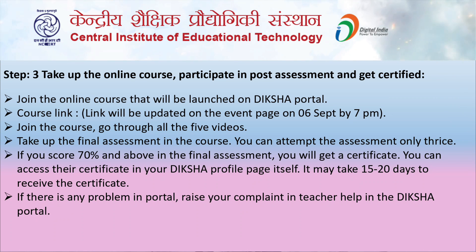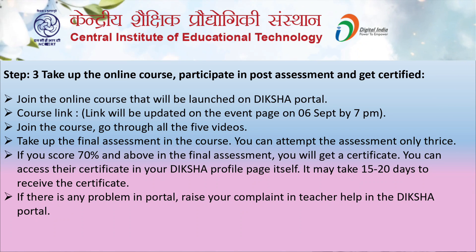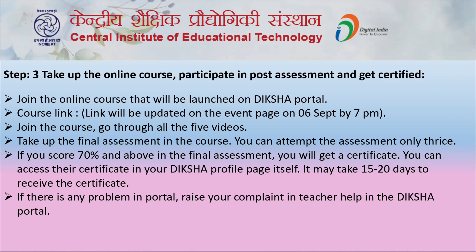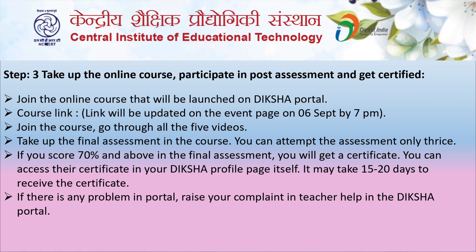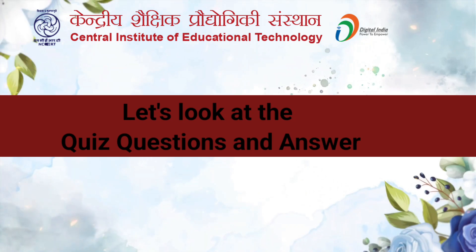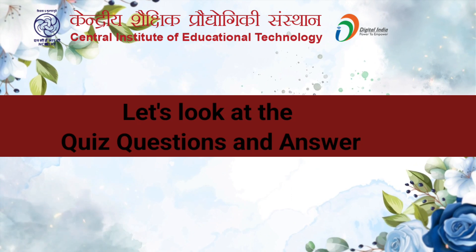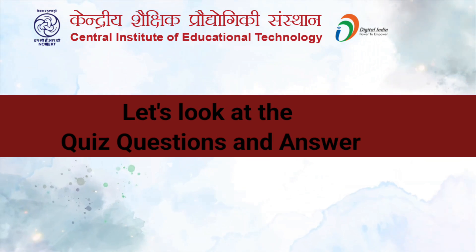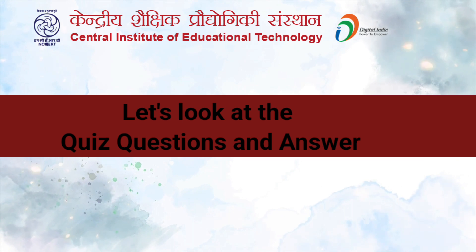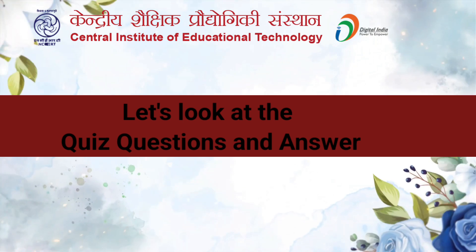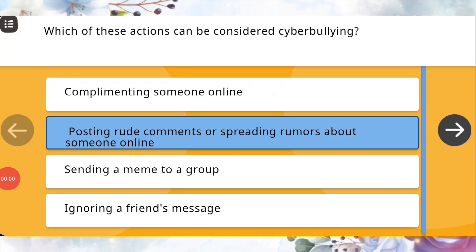You have a maximum of 3 attempts. If you score 70% and above in the final assessment, you will receive a certificate of participation on your Diksha portal profile page within 1 or 2 days. Now let us see the quiz questions with their solutions, where I have scored more than 70%, and you can also score more than 70% and receive your certificate of participation.